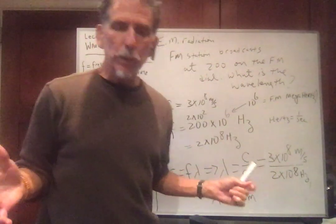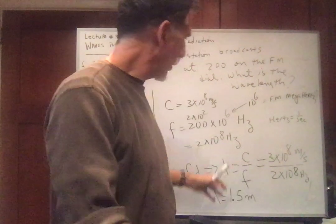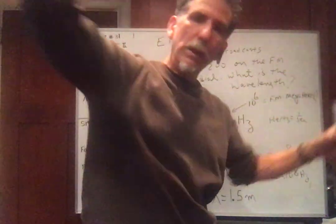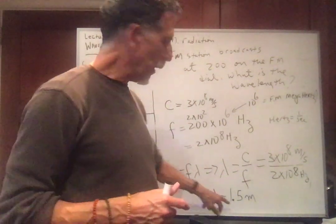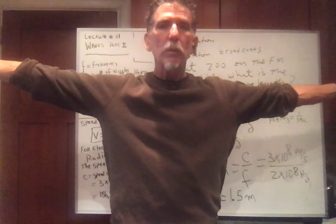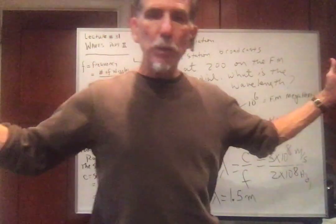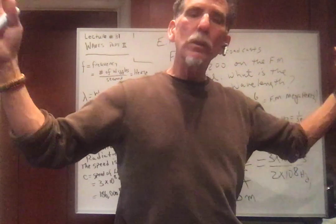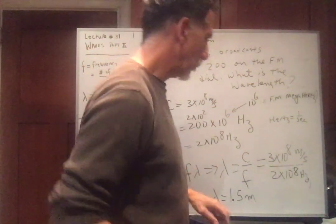So AM radiation, AM stations, 1.5 kilometers. The waves are super big and they're passing through your body. FM is 1.5 meters. That's about 6 feet. A little over 6 feet. So FM waves, more energy, shorter wavelength. AM, less energy, longer wavelength.